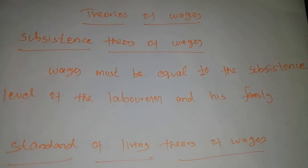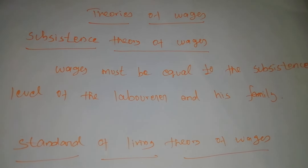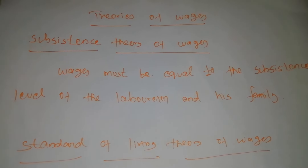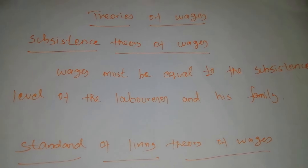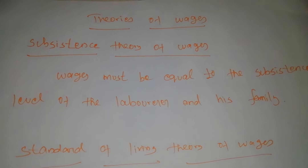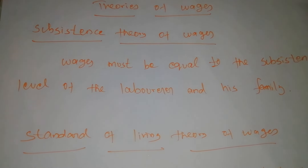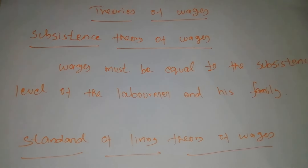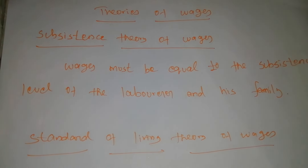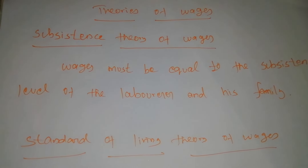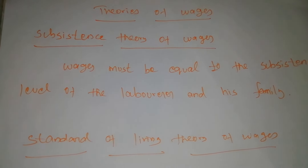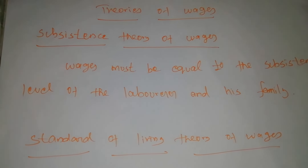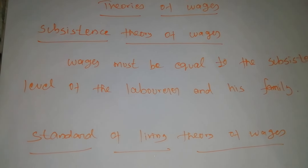In wages, different types of theories exist to explain wage determination, called theories of wages. Many theories explain wages. The first is the subsistence theory of wages. The subsistence theory is one of the oldest theories of wages; it was first explained by the Physiocrats, a group of French economists, and restated by Ricardo.